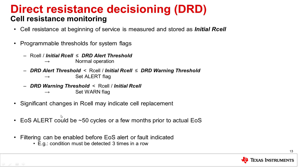These thresholds can be set to give some amount of advanced notice when the cell is approaching the point where it really should be replaced. There is also filtering set up in the device so that you can enable the alert or warning to only be indicated after getting multiple readings above the threshold — for example, two, three, or four readings above the threshold before it actually triggers the alert or warning — preventing false triggers from a single noisy reading.